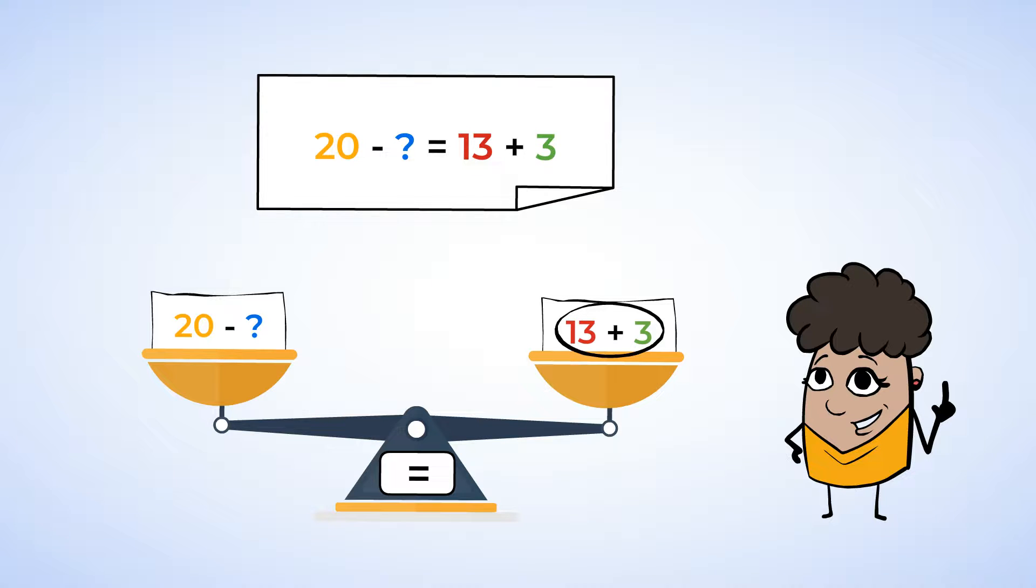Start at thirteen and count three more. Fourteen, fifteen, sixteen. So, thirteen plus three equals sixteen. Now we know the right side is sixteen. And twenty minus what number equals sixteen? Now this looks like a subtraction problem that we can figure out. We can count up to twenty by starting at sixteen. Sixteen, seventeen, eighteen, nineteen, twenty. We counted up four more numbers, which means that twenty minus four equals sixteen.